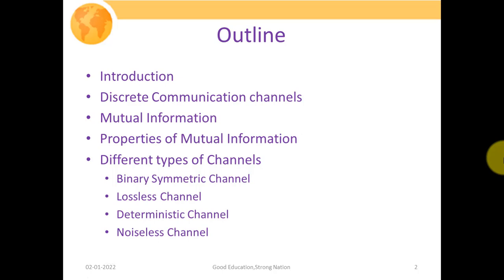These are the outlines: we're going to start with the introduction, then discuss your discrete communication channel — what it is and how we represent it — then mutual information, which is basically the transformation of information from source to destination, its definition, its various properties, followed by different types of channels such as binary symmetric channel, lossless channel, deterministic channel, and noiseless channels, discussing their specifications and transition matrices.